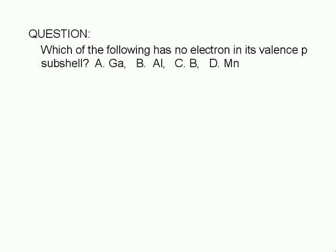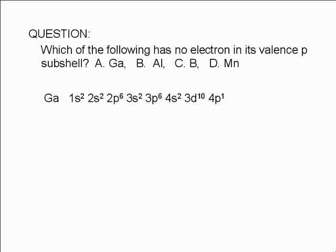To answer this question, let's write the ground state electron configuration for these atoms. For gallium, it's 1s2, 2s2, 2p6, 3s2, 3p6, 4s2, 3d10, 4p1.